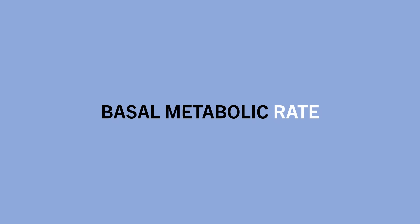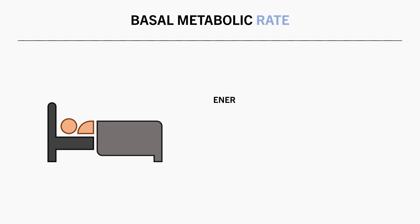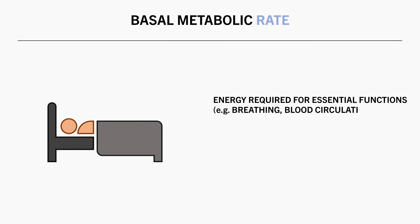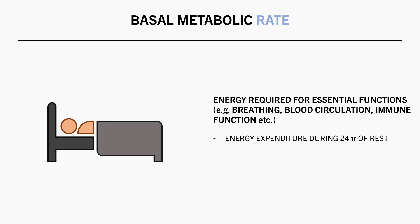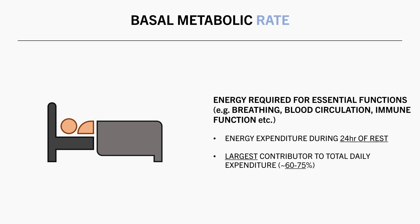First is basal metabolic rate. This is the energy required for essential physiological functions, such as breathing, blood circulation, immune function, and so on. Essentially, this can be thought of as the amount of energy we would expend if we were to rest in bed for 24 hours straight without moving at all. As mentioned, this is the largest contributor to energy expenditure, typically being around 60-75% of total daily expenditure.